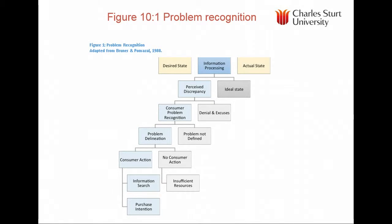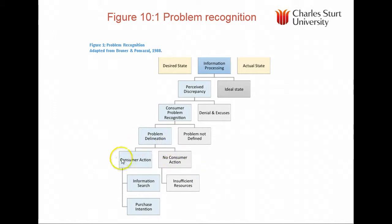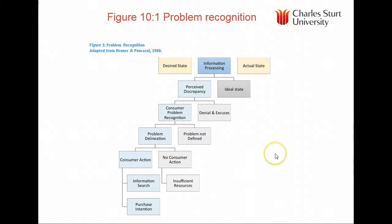Problem recognition is a little more complex than previously shown. There are a number of types: comparing yourself to an ideal state, which is like desire; you may not decide to do something about your health or exercise — that might be denial or excuses; the problem may not be well defined, for example financial security; or you may decide to take no action because you don't have the money, time, or effort. If you do take action, we have information search and purchase intention.